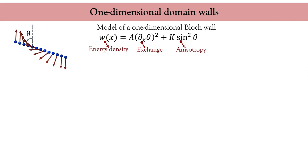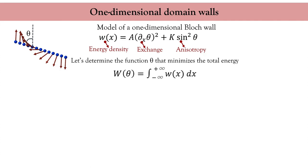The domain wall extends along the x direction and is parameterized by the polar angle theta between the magnetization and the anisotropy axis. What we are looking for is an expression of the domain wall profile — that is, the expression of the polar angle theta as a function of position x. The function theta(x) minimizes the total magnetic energy. To do so, we will use a variational approach and compute the change of energy induced by a small change in theta.